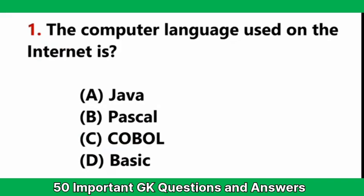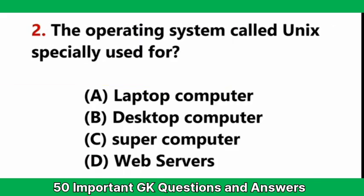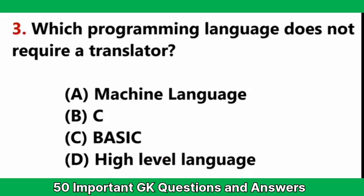The computer language used on the internet is — Answer A: Java. The operating system called Unix is specially used for — Answer D: web servers. Which programming language does not require a translator? — Answer A: machine language.